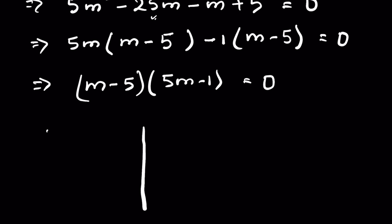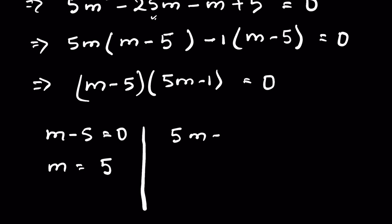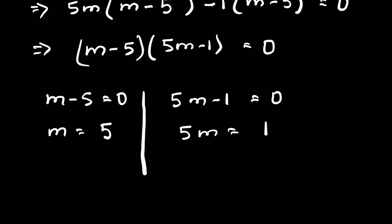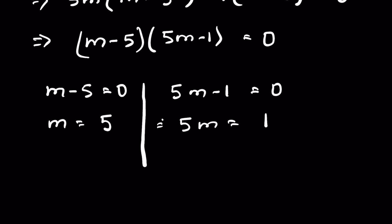There are two solutions for m. When m minus 5 equals 0, then m equals 5. When 5m minus 1 equals 0, then 5m equals 1, so m equals 1 upon 5.